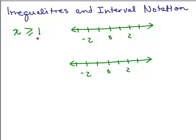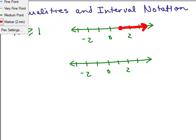X is greater than or equal to 1 — this is more standard notation. If I were to graph that, since X is greater than or equal to 1, it's equal to 1, so I put a dot on 1. And then since it can also be greater, I draw an arrow to the right. That's one way of graphing X is greater than or equal to 1.